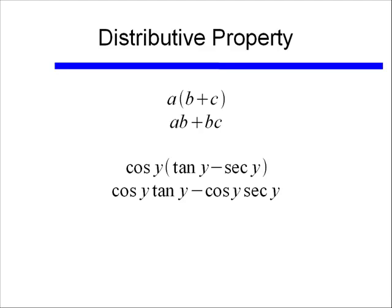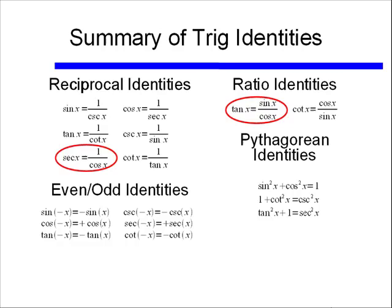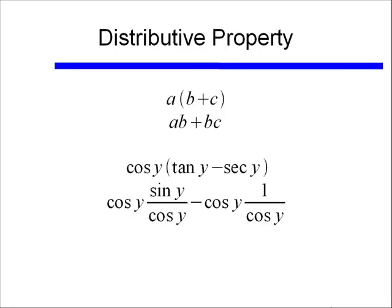Well I'm not going to stop here. This is where I'm going to start using some of those identities we talked about. In this case we'll want to rewrite tangent in terms of sine and cosine and rewrite secant in terms of cosine. If we do that, then we see we have cosine y times sine y over cosine y minus cosine y times 1 over cosine y.